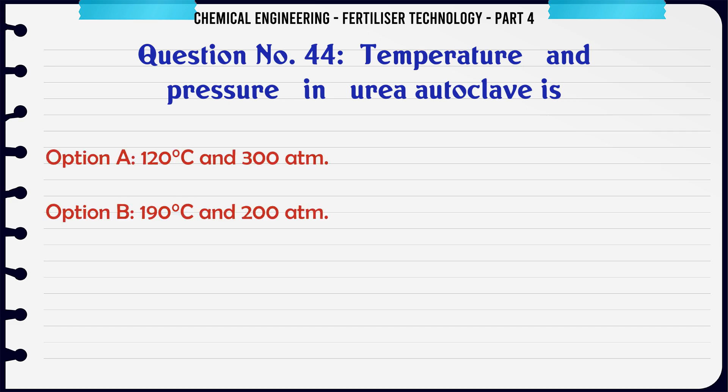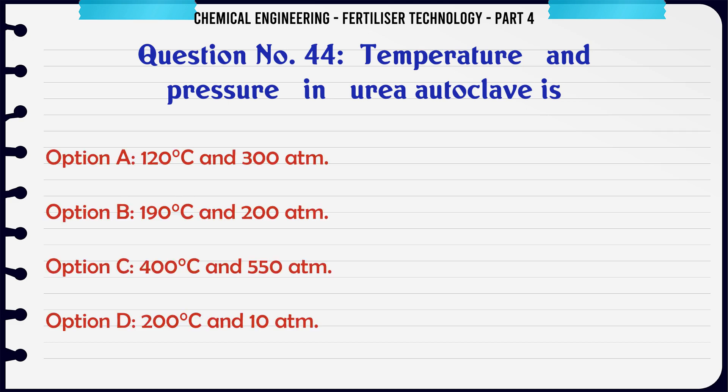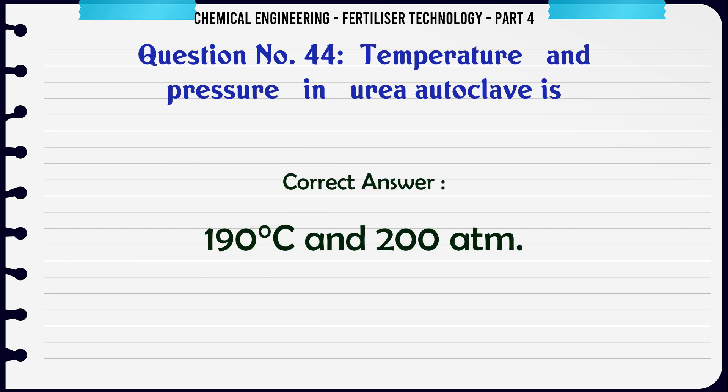Temperature and pressure in urea autoclave is: a. 120°C and 300 atm, b. 190°C and 200 atm, c. 400°C and 550 atm, d. 200°C and 10 atm. The correct answer is: 190°C and 200 atm.